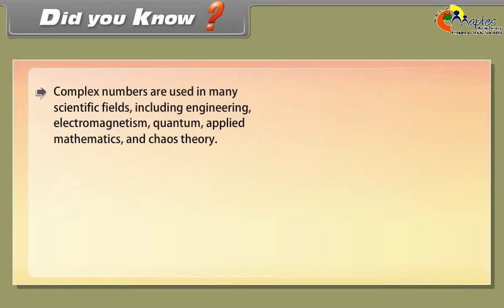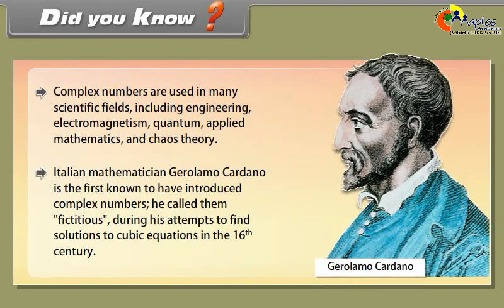Complex numbers are used in many scientific fields including engineering, electromagnetism, quantum physics, applied mathematics, and chaos theory. Italian mathematician Girolamo Cardano is the first known to have introduced complex numbers — he called them fictitious during his attempts to find solutions to cubic equations in the 16th century.